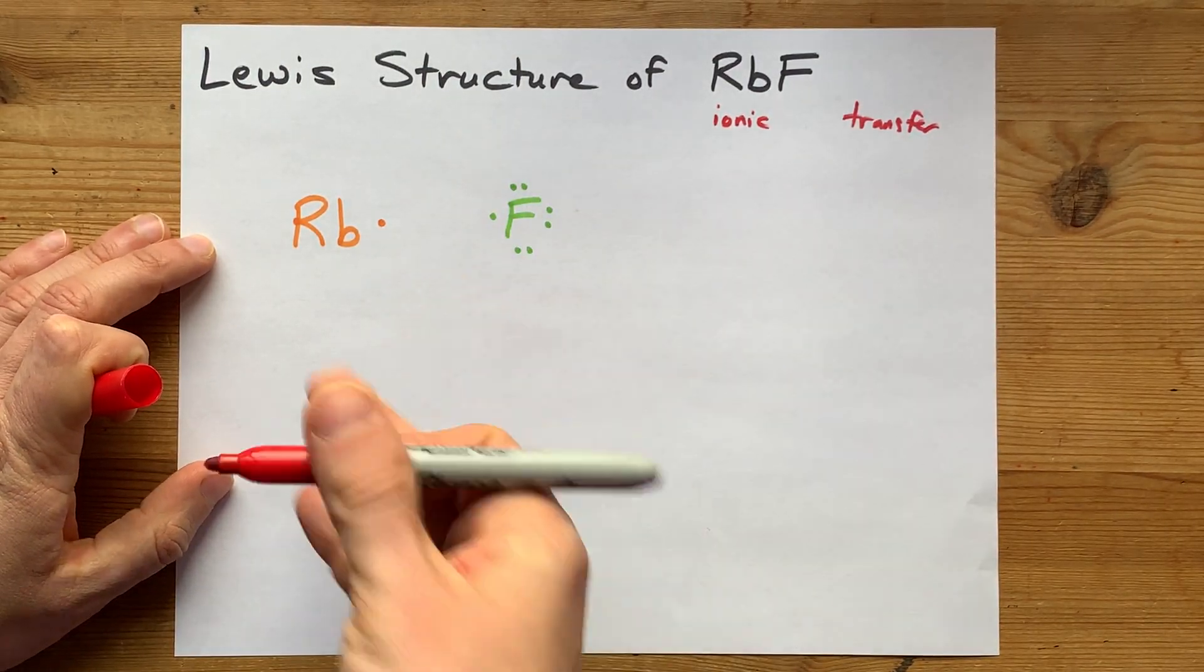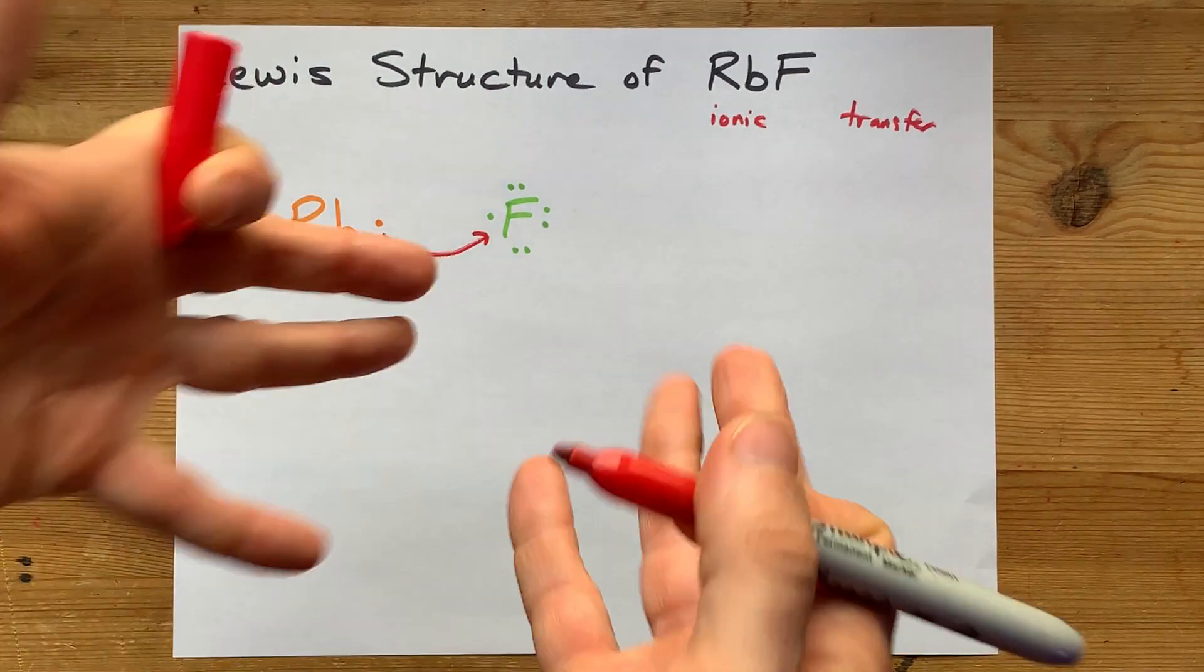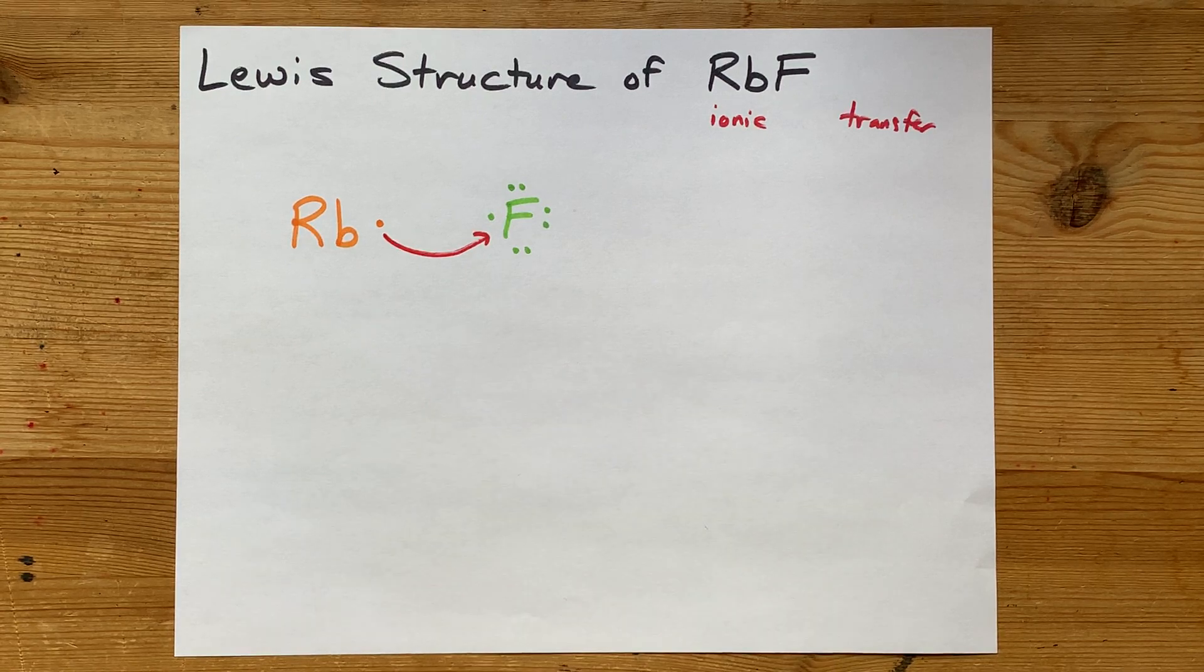Anyways, the point is, where is fluorine going to get the eighth electron to complete its octet? The answer is, rubidium will be like, here, take mine. You can have it. In fact, I want you to have it.